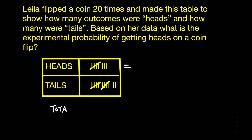The first thing we're going to do is tally up the results. They've told us there are 20 coin flips, and if you look at the table and count how many events are heads, that's 8, and then if you count the number of tails, that's 12, for a total of 20.